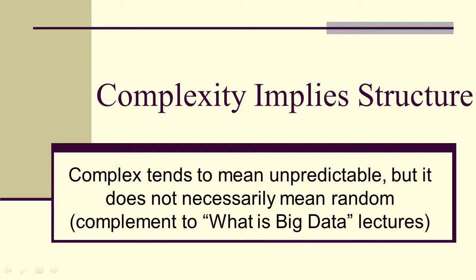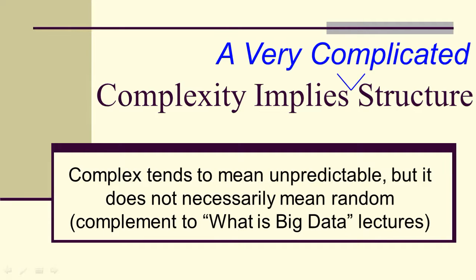This is a follow-up to the What is Big Data lectures, where we're going to look at complexity in more detail, especially in the sense that it implies structure. We've already seen that complex tends to mean unpredictable, but it doesn't necessarily mean random. Instead, it usually means a very complicated structure.